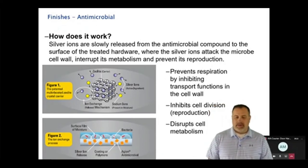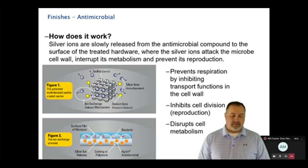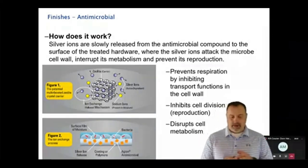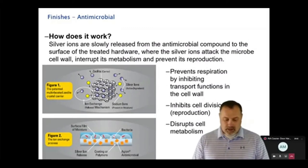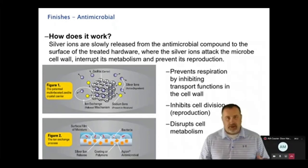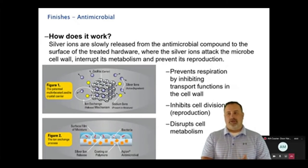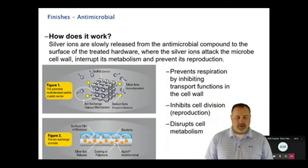How does silver ion work? Silver ions are slowly released from antimicrobial compounds to the surface of the treated hardware, where they attack the microbe cell wall, interrupt its metabolism, and prevent its reproduction. As shown in the chart here, the silver ion attaches to bacteria, disrupts and changes its metabolism, and the bacteria eventually dies. Silver ion starts working the moment it is applied, but it takes time to fully repel or kill bacteria — I believe it takes up to 36 to 72 hours.